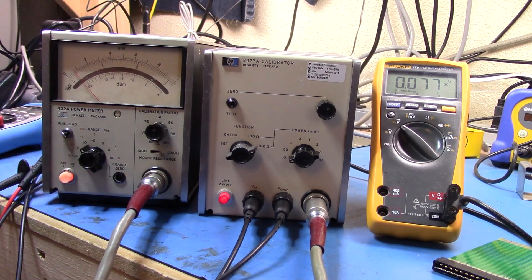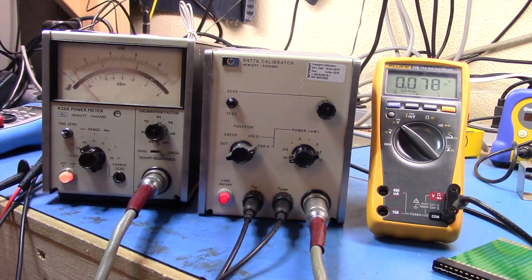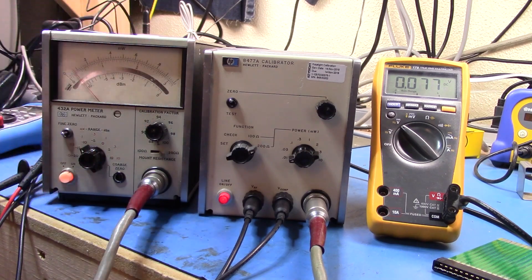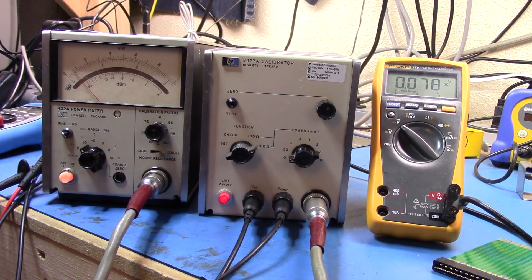I just wanted to show that bringing those rails back in place and using the 8477A calibrator, we can see whether or not the unit's actually in a working state and then maybe later on I can get everything set up and do a calibration.